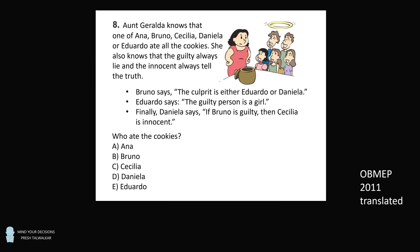Aunt Ziralda knows that one of Ana, Bruno, Cecilia, Daniela, or Eduardo ate all the cookies. She also knows that the guilty always lie and the innocent always tell the truth. Bruno says the culprit is either Eduardo or Daniela. Eduardo says the guilty person is a girl. Finally, Daniela says if Bruno is guilty, then Cecilia is innocent.